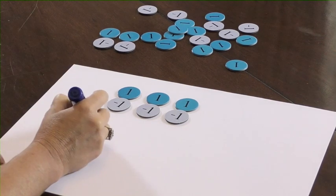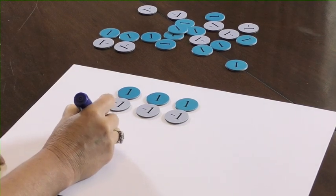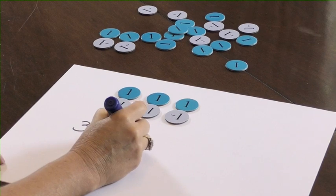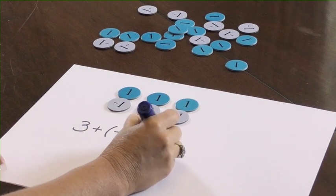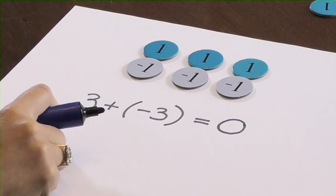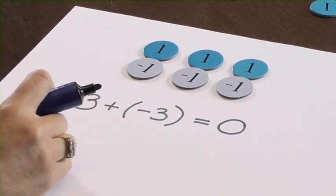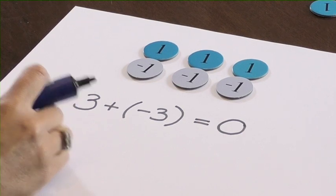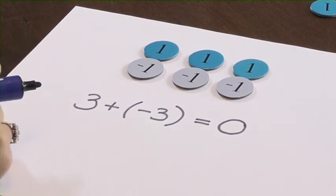So, we could write three plus negative three equals zero. And that's a really important point to understand before we start working with algebra disks.